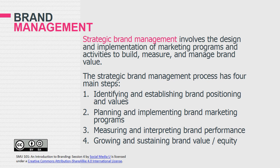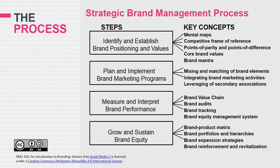The process of strategic brand management basically involves four steps. The first step is identifying and establishing brand positioning. Brand positioning is defined as the act of designing the company's offer and image so that it occupies a distinct and valued place in the target customer's mind. Key concepts are point of difference, what's called the mental map, the core brand associations, and the brand mantra.